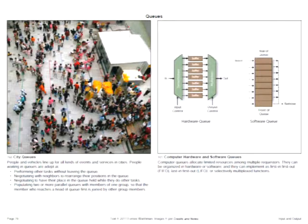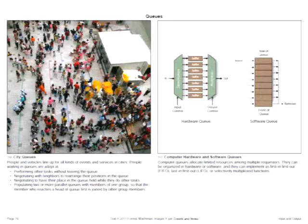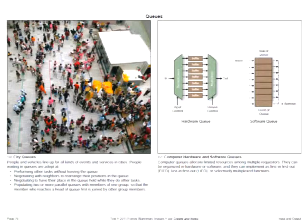Queues are used in computers, implemented either in hardware or software, but computers have limited capability to reorganize entries in such a queue. Human queues are much more flexible — humans are adept at dealing with queues, performing other tasks while waiting, negotiating with neighbors to rearrange their positions, and having their place held while they go off to do other tasks.